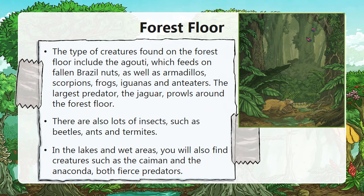The types of creatures found on the forest floor include the agouti, which feeds on fallen Brazil nuts, as well as armadillos, scorpions, frogs, iguanas and anteaters. The largest predator, the jaguar, prowls around the forest floor. There are also lots of insects such as beetles and termites. In the lakes and wet areas you will also find creatures such as the caiman and anacondas, both fierce predators.